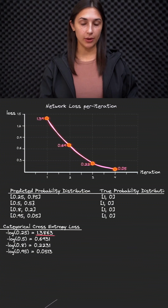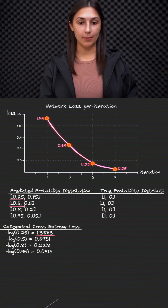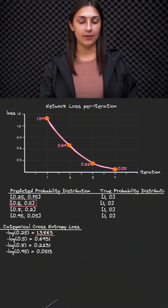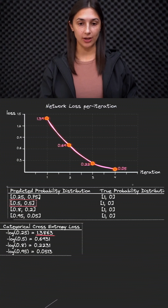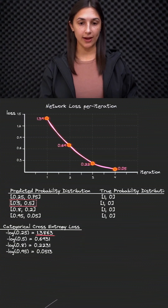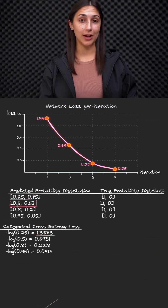During the second iteration, let's suppose that the network improves so that the probability distribution looks like this. It's kind of split in this case, where we are now seeing the network give a 50% probability to the image being a dumbbell and 50% to being a kettlebell. This is an improvement from the past iteration, where we saw only a 25% probability assigned to dumbbell — now we have a 50% probability assigned to that correct class.